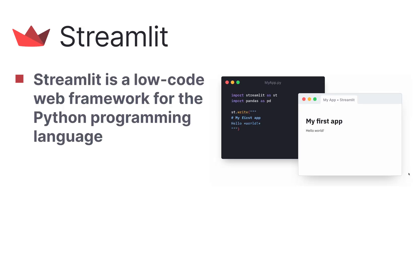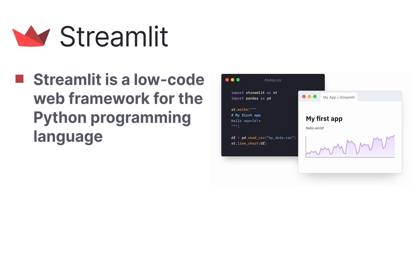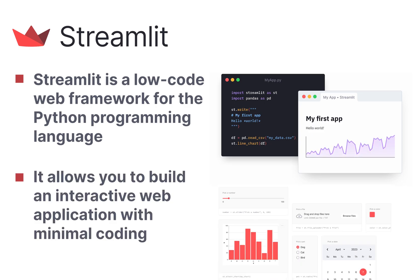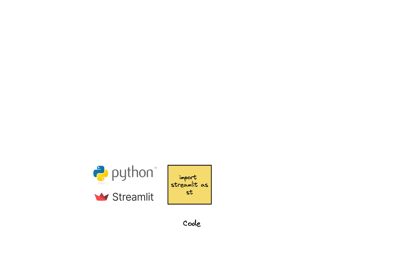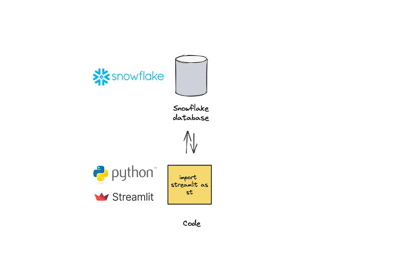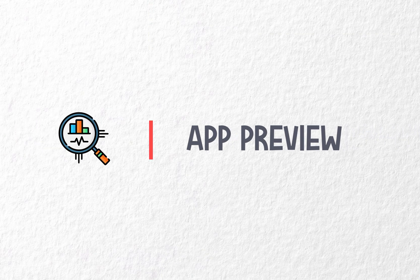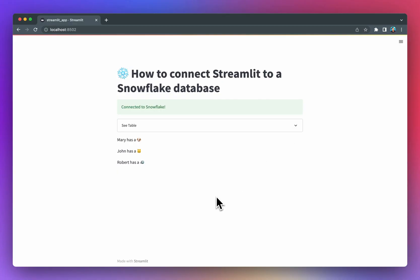Streamlit is a low-code web framework for the Python programming language. It allows you to build an interactive web application with minimal coding. Let's take a look at the conceptual overview of this tutorial. We'll start by coding the app using Streamlit in Python, then access and load data from the Snowflake database, and finally write the data out to the Streamlit app. Let's take a preview of the Streamlit app that we'll be building today.